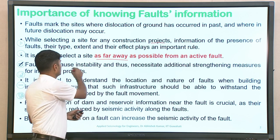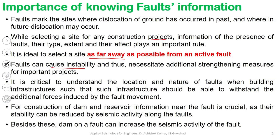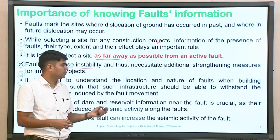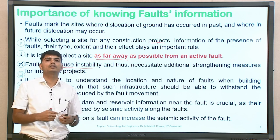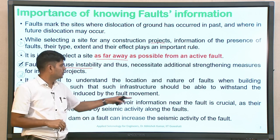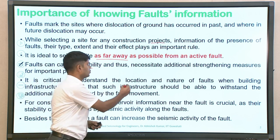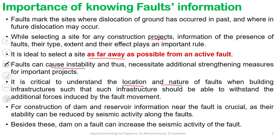Whenever there is movement, it is going to cause some kind of instability to the proposed structure. It is critical to understand the location and the nature of the fault, where it is available, and what is the possible movement dominating on a particular fault, as evidenced over the last 50 to 100 years — depending on how much data is available or inferred from indirect measurements suggesting possible kinds of movement in terms of the nature of the fault.